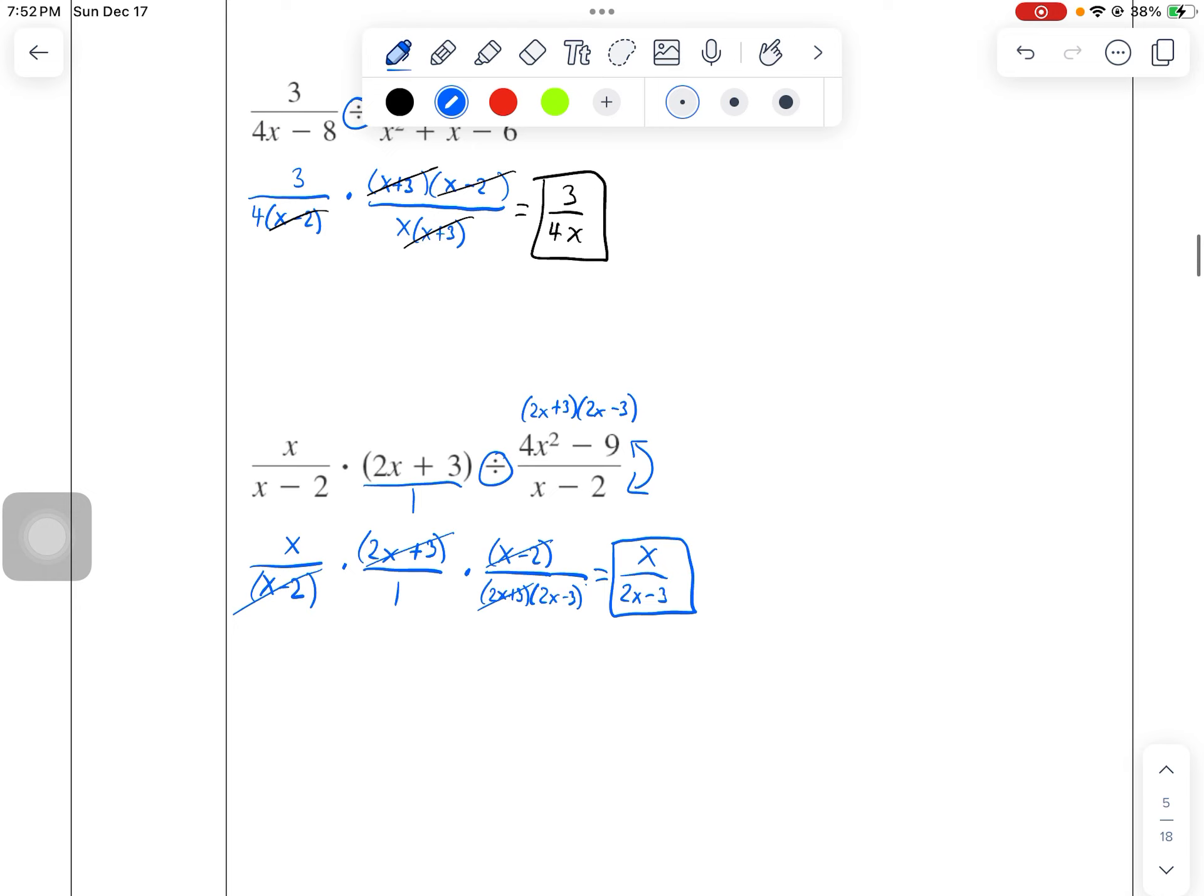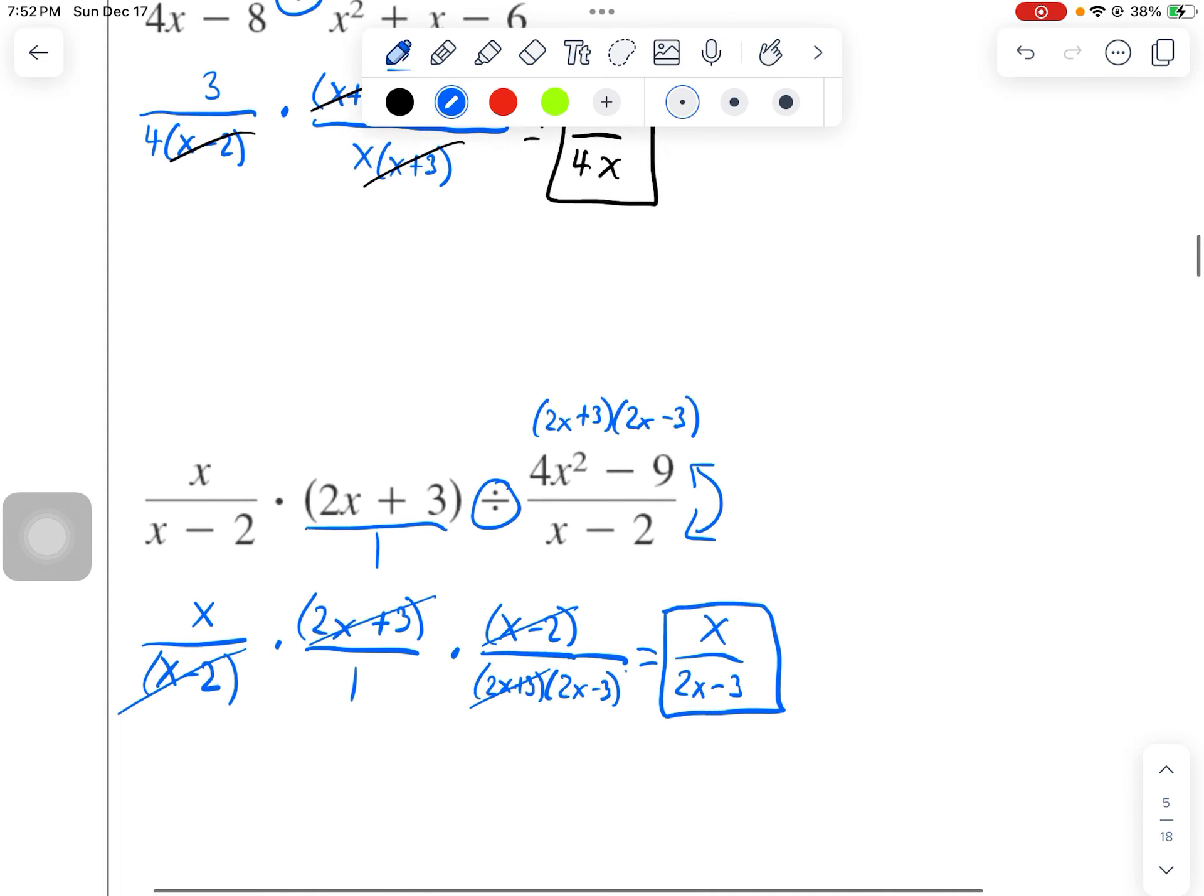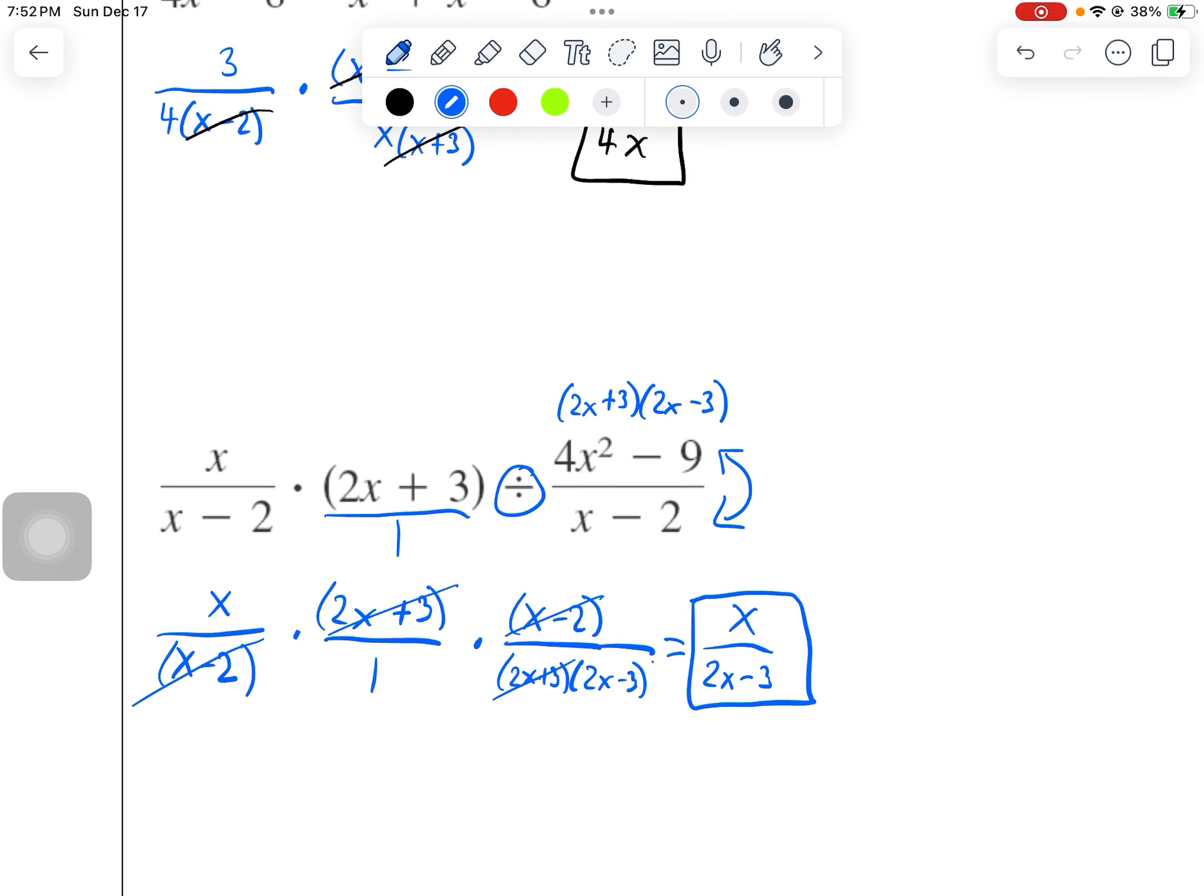Looks like that's it for this one. Remember for the multiplication factor, and then you can do that cross simplification with division, keep change flip. Don't forget to flip the fraction following the division sign.